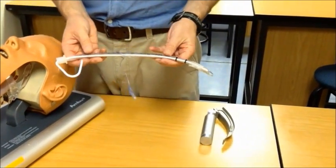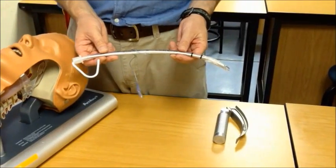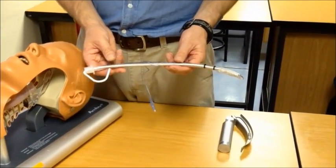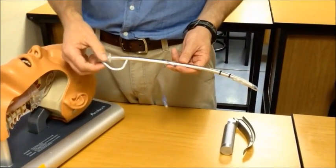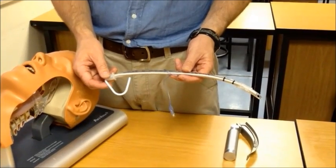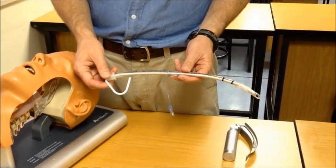Even though the ET tube is now removed from the packaging for me to demonstrate the skill to you, in reality you would keep it inside the packaging, opening only the one end to give access for the stylet. Please refer to video part 3 for proper handling of equipment around intubation.